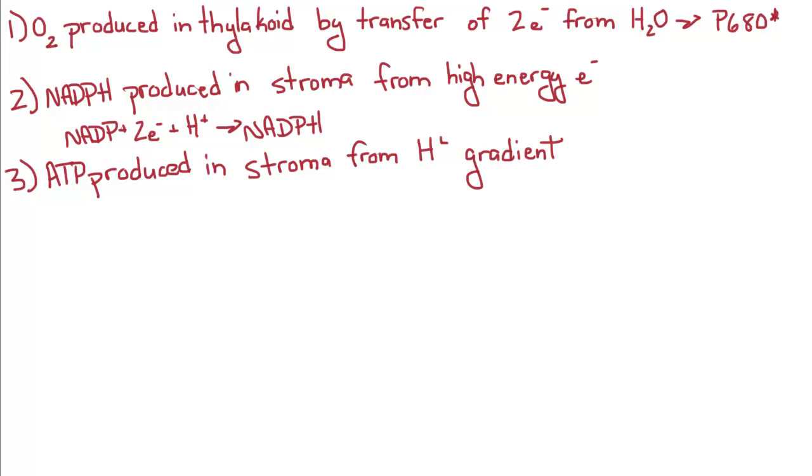You've got oxygen produced in the thylakoids by the transfer of two electrons from water to the oxidized form of the chlorophyll A, the P680 molecule.